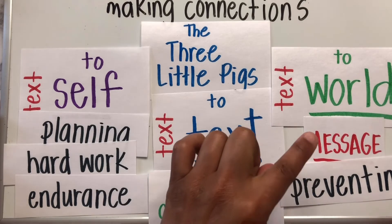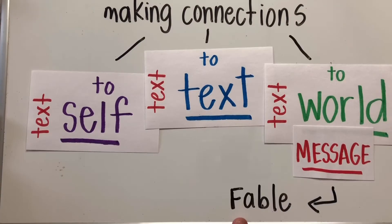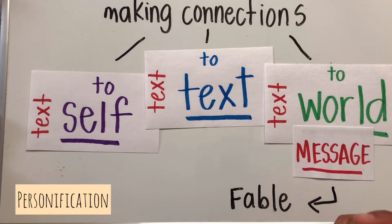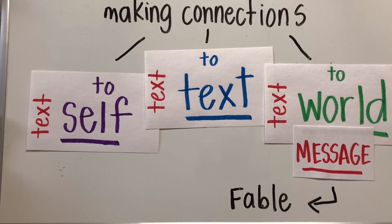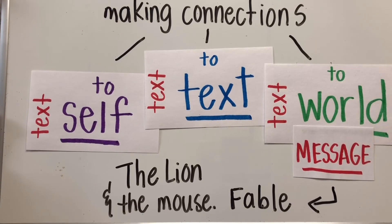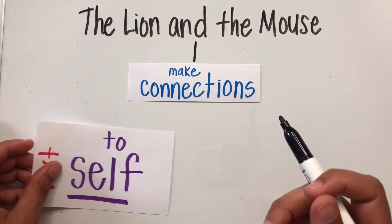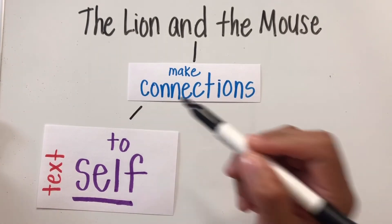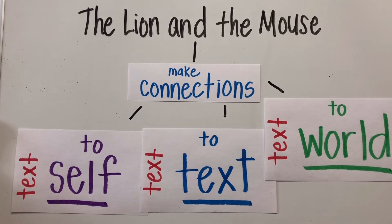When it comes to the message of a text or the theme, we think about fables. Fables are quick, short stories that use personification where the animals have human characteristics. They speak, think, and behave like humans to demonstrate a lesson that humanity can learn from. Let's take a look at The Lion and the Mouse. Let's make connections with The Lion and the Mouse by connecting it to ourself, to another text, or to something that's happening in the world.